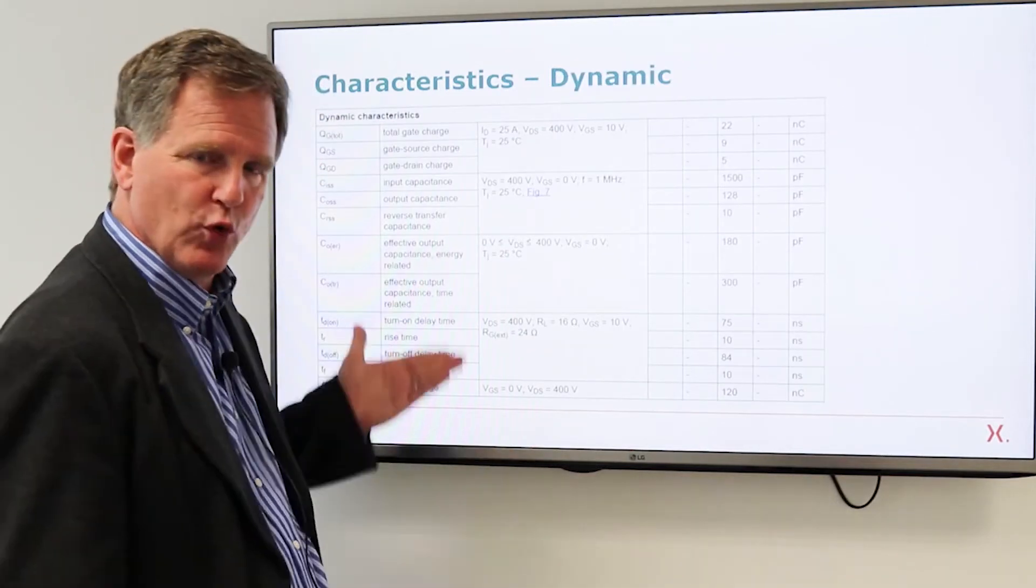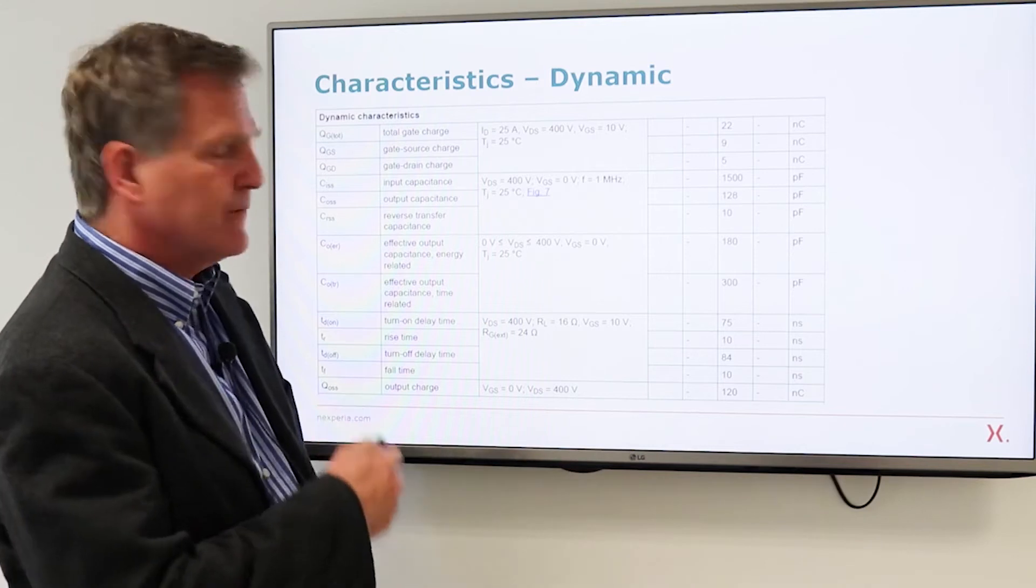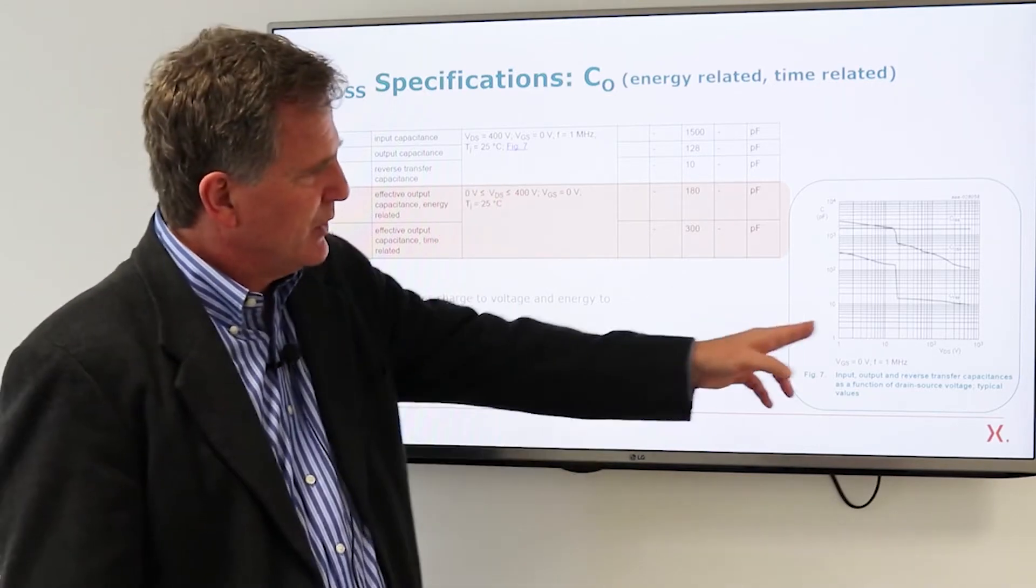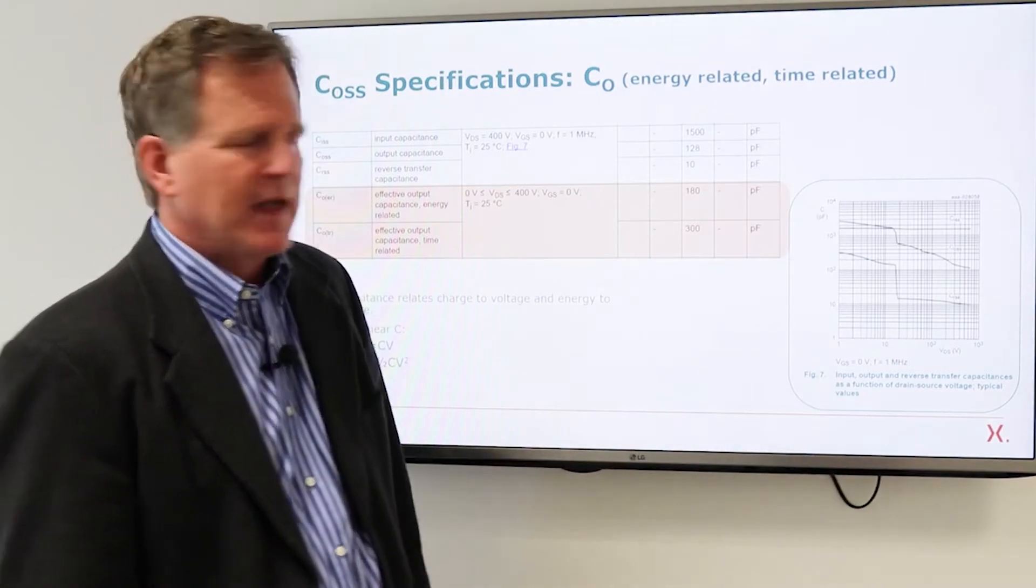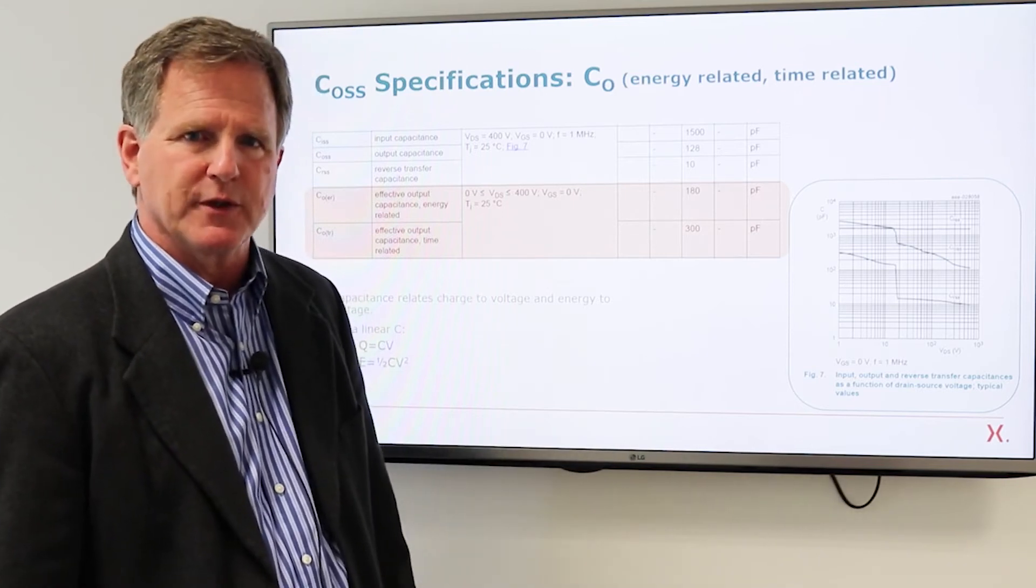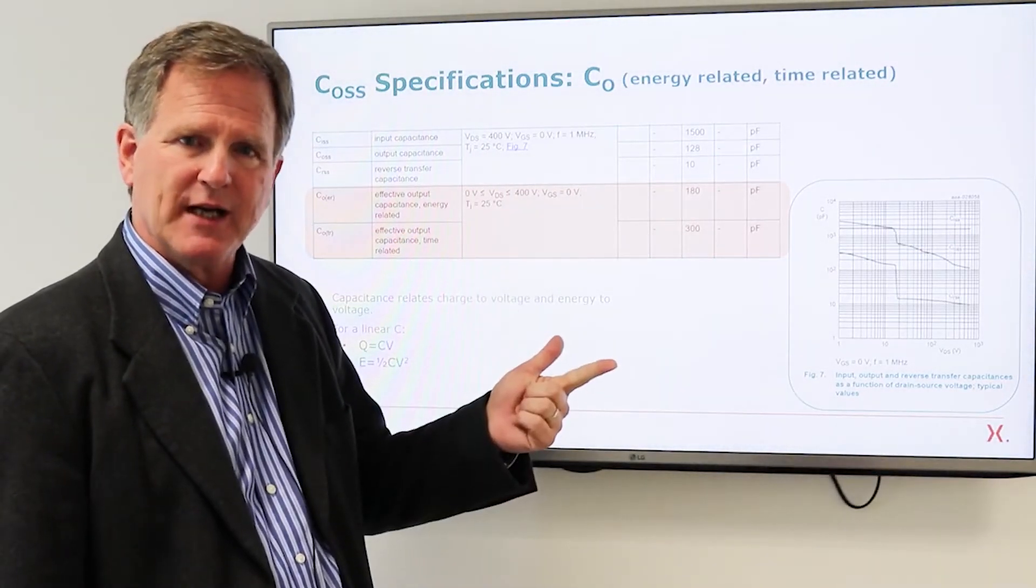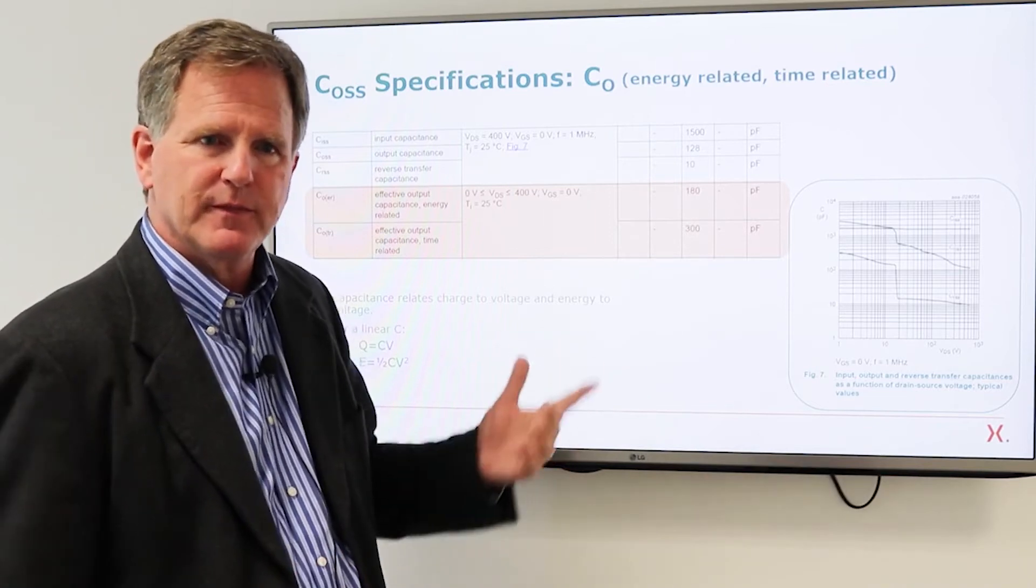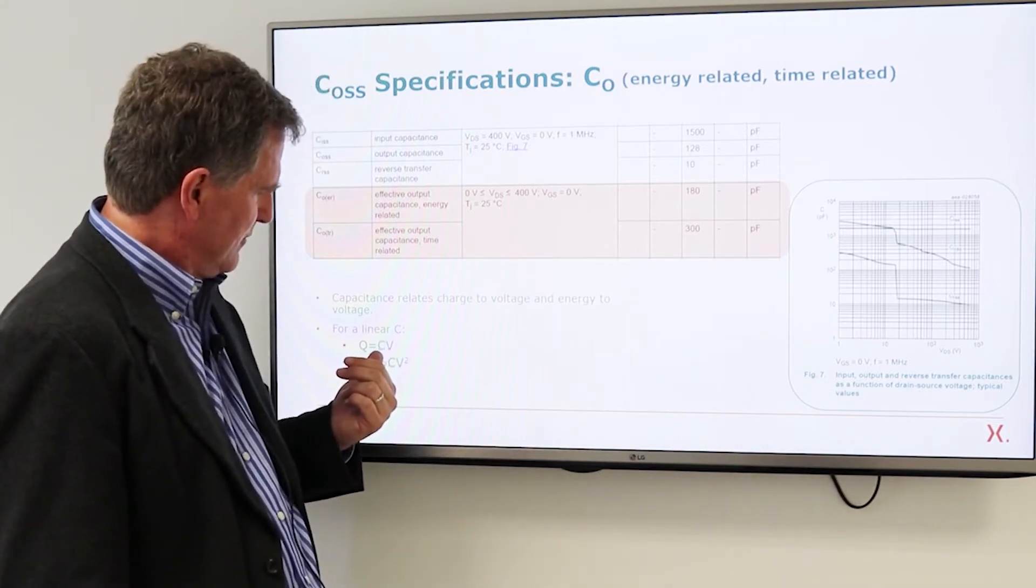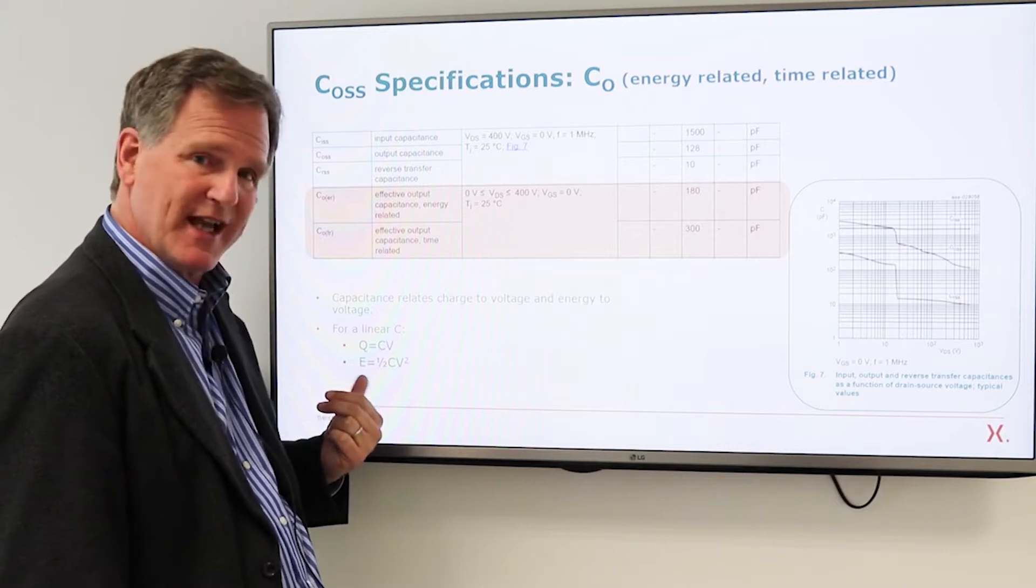Dynamic characteristics we have a whole list of the normal or normal looking characteristics, charge capacitance delay times. We specify the usual small signal capacitances and we also give the chart of capacitance versus voltage and because small signal capacitance is not a very useful parameter for switching circuits the industry has come up with two additional output capacitance parameters one related to energy and one related to time to help you evaluate how the capacitance works in your circuit and that's understood based on the two functions that capacitance tells you, one is it relates charge to voltage and the others it relates energy to voltage.